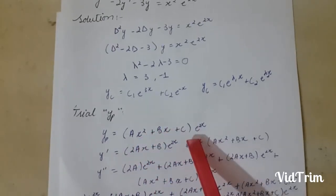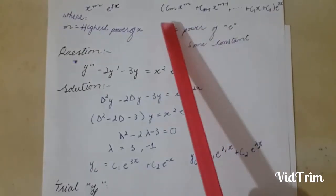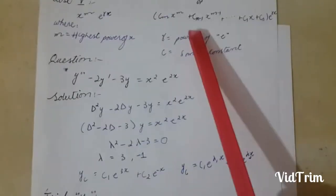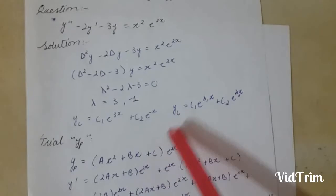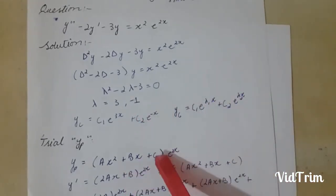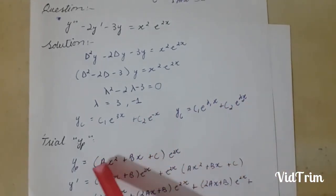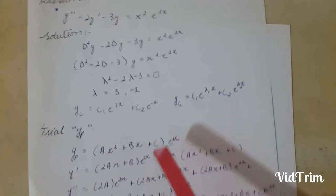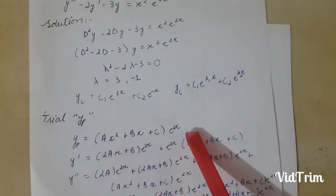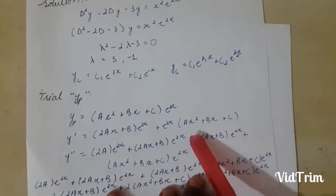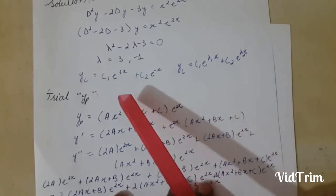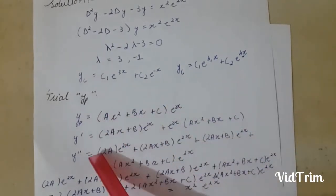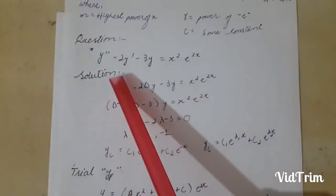b and c as constants where cm is a, cm minus 1 is b and so on up to c0. I take the derivative of this equation and then the double derivative and I put the values of yp, y derivative, and y double derivative in this equation.